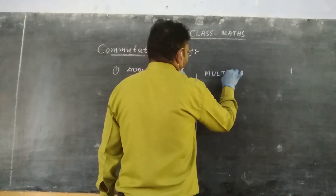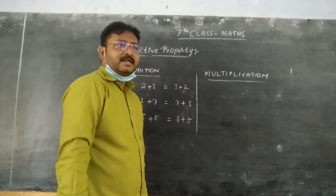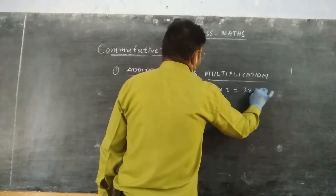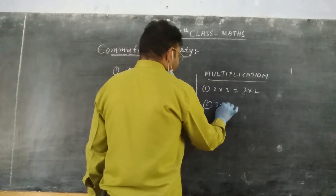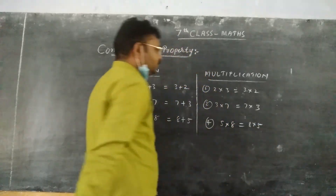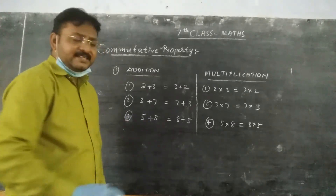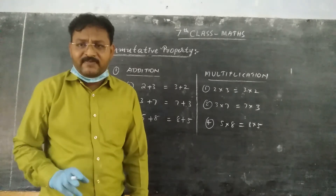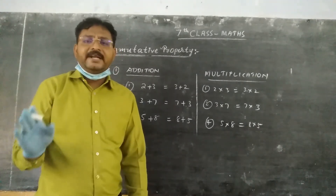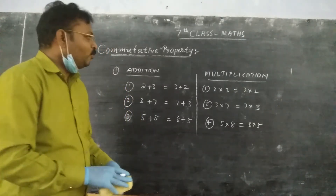Next, commutative property under multiplication. Problem 1 — 2 into 3 equal to 3 into 2. Problem 2 — 3 into 7 equal to 7 into 3. Problem 3 — 5 into 8 equal to 8 into 5. Verify whether they are satisfied or not, and below each problem write whether commutative property is satisfied.